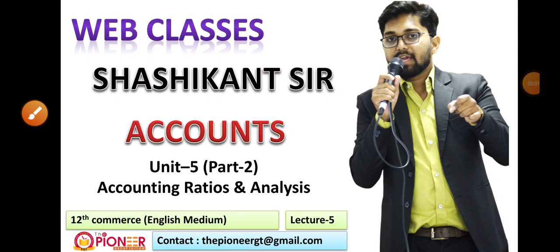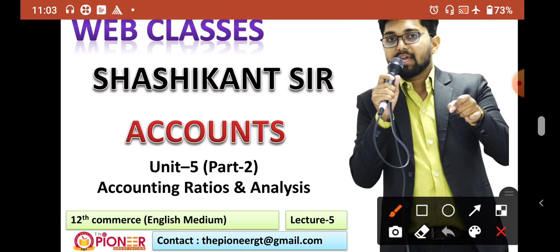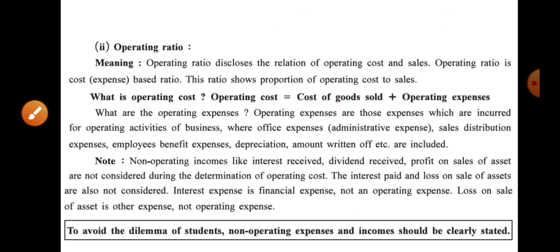Hello students, welcome once again to the web classes. Today we are going to see the subject accounts unit number 5 of part 2. The name of the chapter is Accounting Ratio and Analysis for the twelfth commerce English medium. So far we had completed gross profit ratio. Today we are going to see operating ratio.